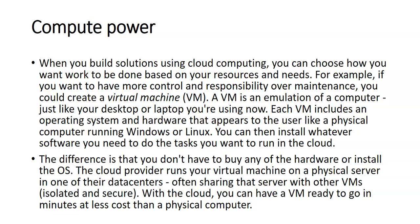When you build solutions using cloud computing, you can choose how you want work to be done based on your resources and needs. For example, if you want more control and responsibility over maintenance, you could create a virtual machine. A virtual machine is an emulation of a computer — just like your desktop or laptop. Each VM includes an operating system and hardware that appears to the user like a physical computer running Windows or Linux. You can install whatever software you need. The difference is you don't have to buy hardware or install the OS — the cloud provider runs your VM on a physical server in one of their data centers, often sharing that server with other VMs. With the cloud, you can have a VM ready to go in minutes at less cost than a physical computer.